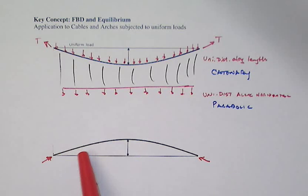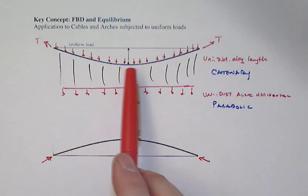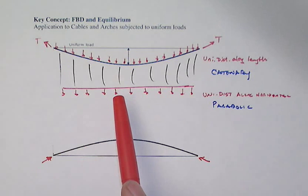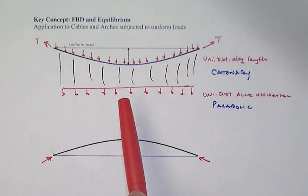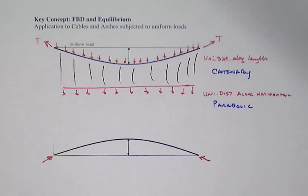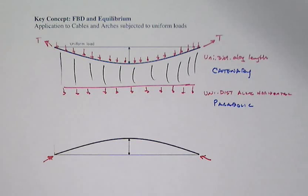In the catenary or parabolic tensile situation, the cable will pretty much do whatever it needs to get into pure tension without bending. But not so in the arch situation — it doesn't have that flexibility to morph itself into its optimal position. Instead, it must deal with the shape we've created, and if it starts working in bending, we tend to have arch stability problems.